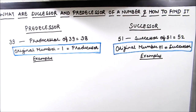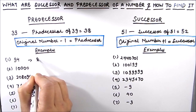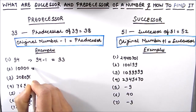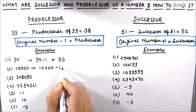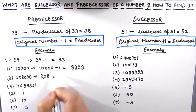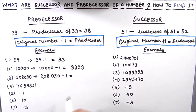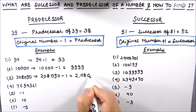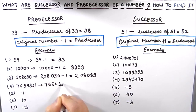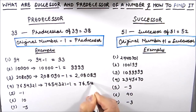Let us now solve some examples. First, we find the predecessor of these numbers. The predecessor of 94 is 94 minus 1, which equals 93. Next, the predecessor of 10,000 is 10,000 minus 1, which is 9,999. The predecessor of 2,08,090 is 2,08,089. The predecessor of 76,054,321 is 76,054,320.